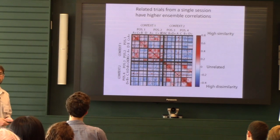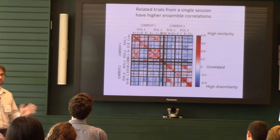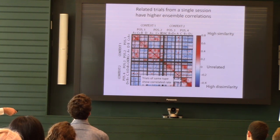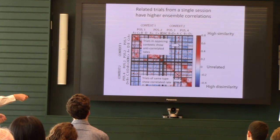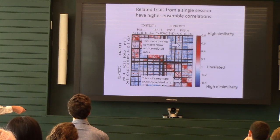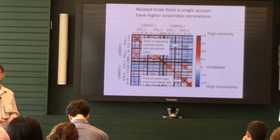This is a similarity matrix, taking each ensemble representation and correlating every trial with every other trial. Trials were given semi-randomly; I've sorted them here according to the dimensions we imagined would be important. Repetitions of the same object in the same place have very correlated neural representations, suggesting the hippocampus is not doing something random. Trials that took place in opposing contexts are highly anti-correlated, as you can see from the sea of blue. There are other patterns too: events taking place within the same place with the same reward outcome but different object identity show a decrease in correlation, telling us how much this region cares about object identity.